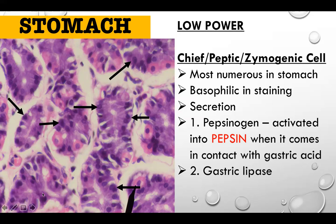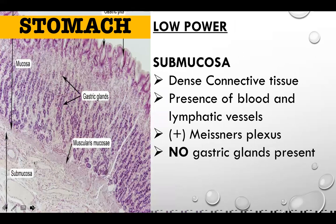These are the two most common cells found in the stomach. In the submucosa of the stomach, it is composed of dense connective tissue with blood and lymphatic vessels. Meissner's plexus is present, responsible for mucosecretion. There are no gastric glands present in the submucosa of the stomach.